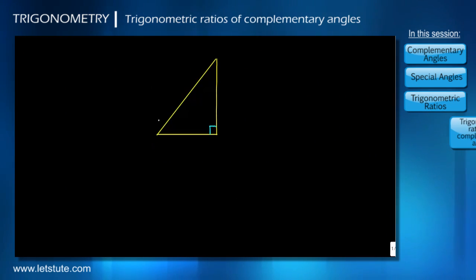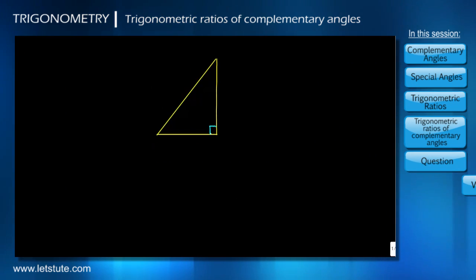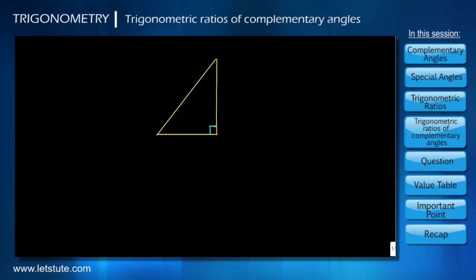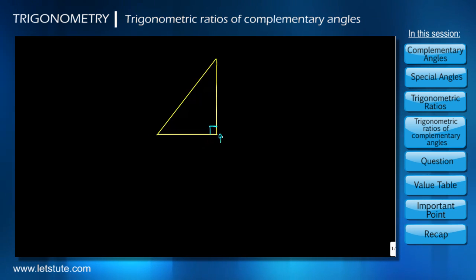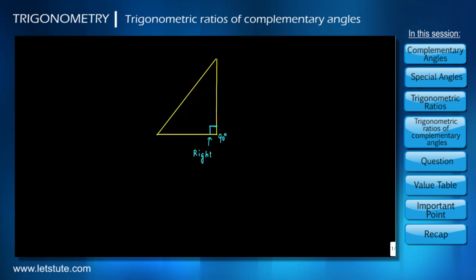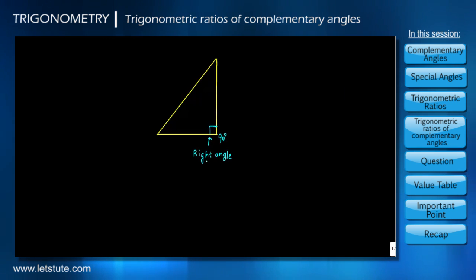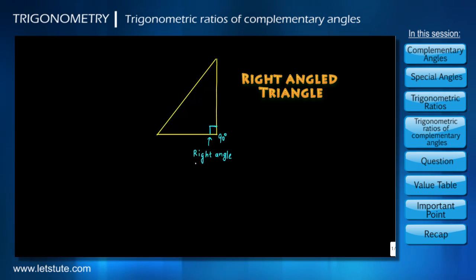Look at this triangle. When we see this sign at the corner, it describes an angle of 90 degrees, which is also known as a right angle. Therefore, this triangle is called a right angle triangle.